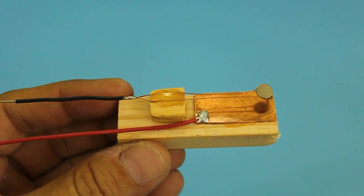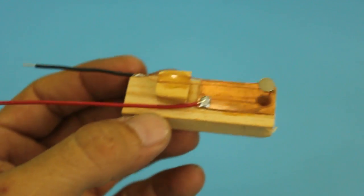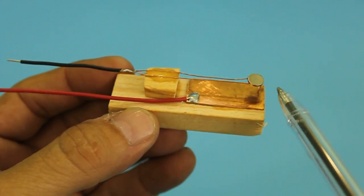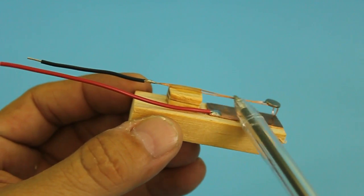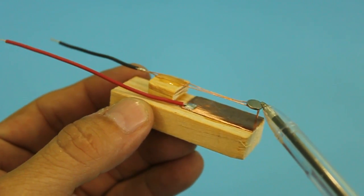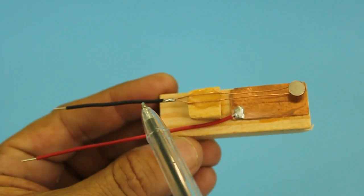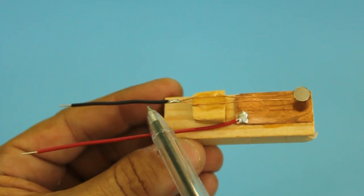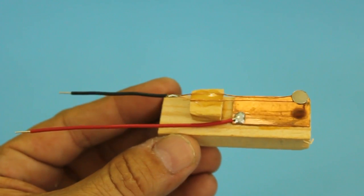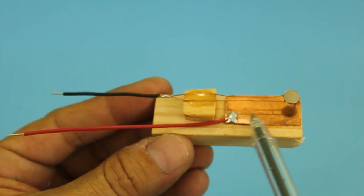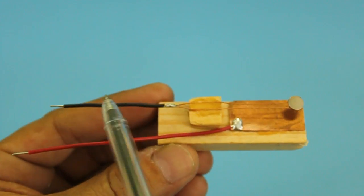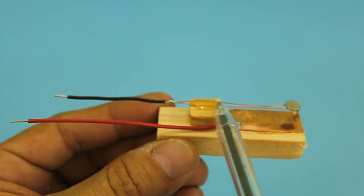In order to finish our reed switch we need to add a small magnet on top of the copper wire. The magnet is glued with epoxy and we also added a pair of wires that will be used as contacts. One wire goes to the copper base and the other to the thin wire.